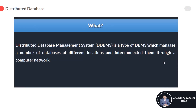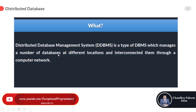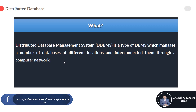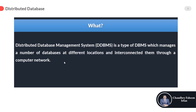Here is the definition of Distributed Database. A Distributed Database Management System, or DDBMS, is a type of DBMS which manages a number of databases at different locations and interconnects them through a computer network. In a Distributed Database, we make fragments of our main database and store them at different locations. It provides mechanisms so that the distribution remains unaware to the users — we perceive it as a single database.